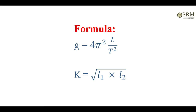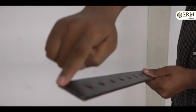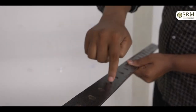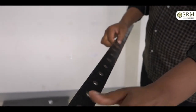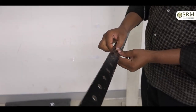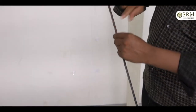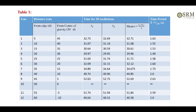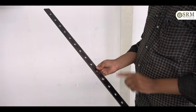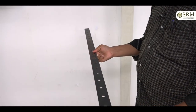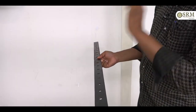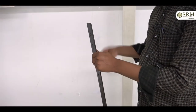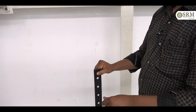Here, distance is from one edge — at 5, 10, 15, 20, 25, 30, 35, 40, 45, 50 — from one edge to the center of gravity, and later on from center of gravity to another edge. So length means the distance from one edge to center of gravity and from center of gravity to another edge. Here we find out length corresponding time period.